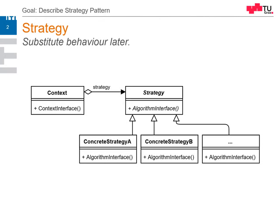How can this look like? We have some context, some calling context, some client which uses a specific method.